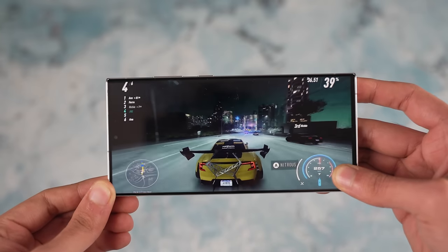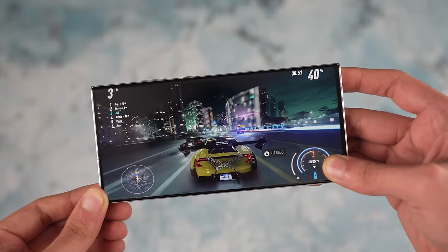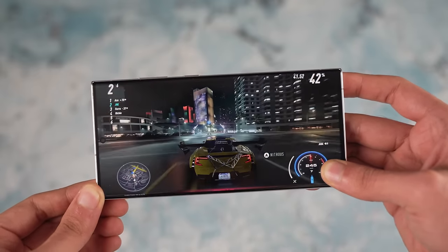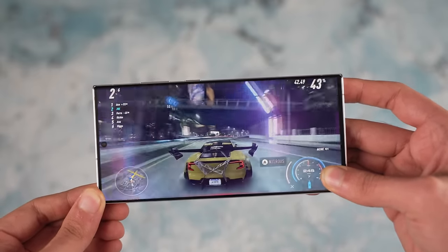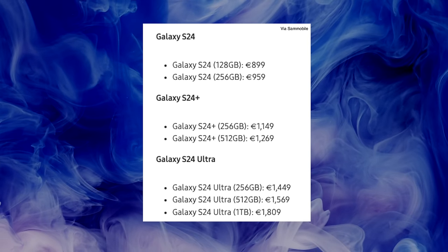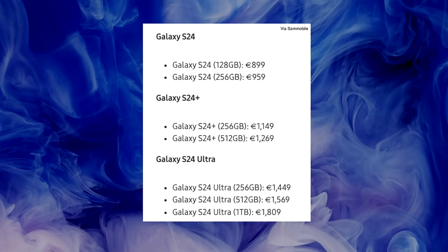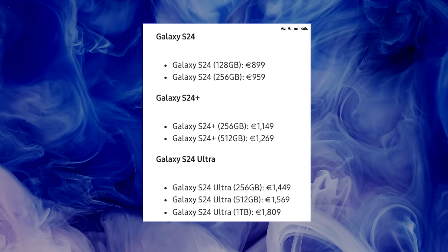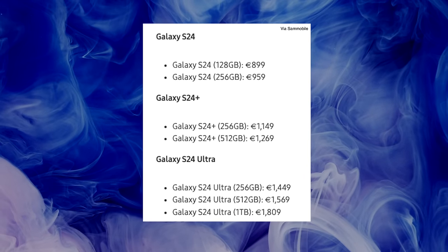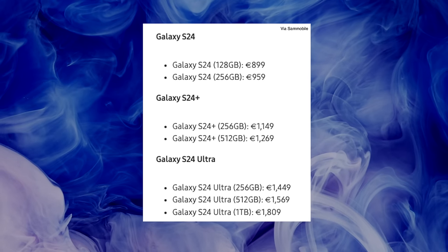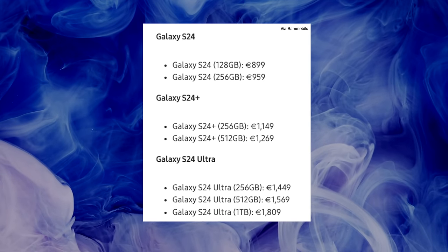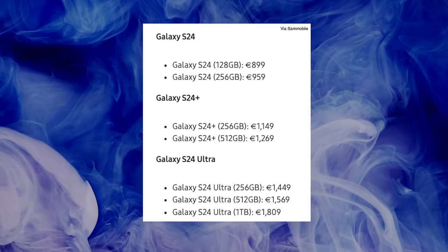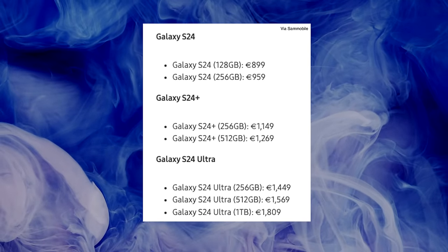Also in the news, we have a price leak for the Galaxy S24 series in the major European market of Italy. The prices for the base S24 and the S24 Plus are indeed slightly cheaper than last year's model — about 49 euros cheaper — whereas the prices for the S24 Ultra are the same as the 2023 flagship.